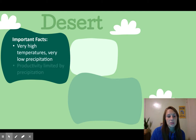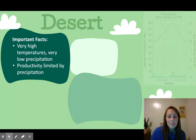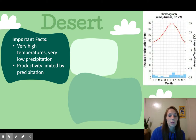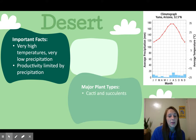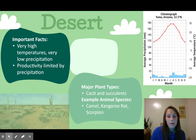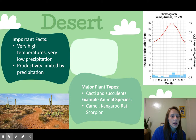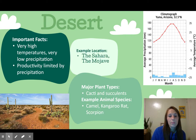Then we have the desert, known for very high temperatures and very low precipitation. Productivity and plant life is limited by precipitation. The climatogram shows high temperatures and low rainfall. Plant types you'll find here are cacti and succulents. Animals might be a camel, kangaroo rat, or scorpion. There are no big tall trees — you've got cacti and plants able to hold water for long spells without rain. Examples are the Sahara Desert or the Mojave Desert.